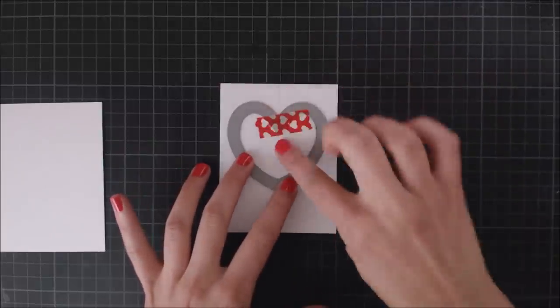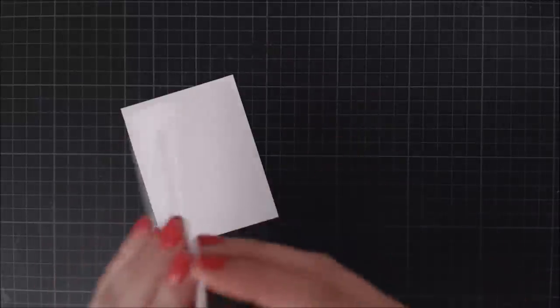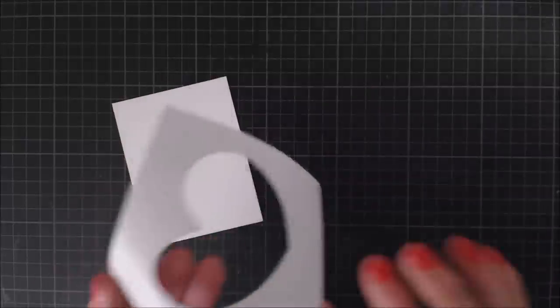I'm going to be using my cutting machine to die cut the heart from the masking paper, keeping the negative space, then I'm going to peel it off and adhere it to my piece of cardstock.